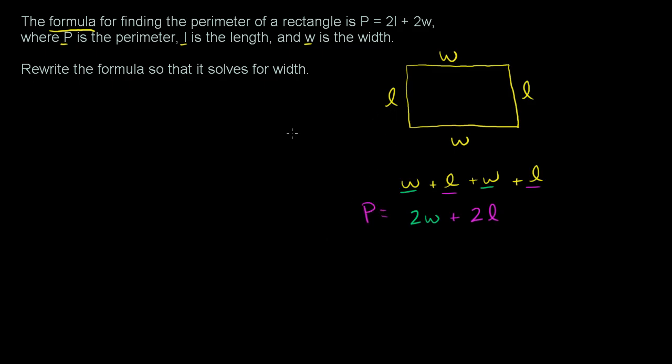So hopefully that makes sense. Now, their question is, rewrite the formula so that it solves for width. So it solves for width. The formula, the way it's written now, it says P is equal to something. They want us to write it so this w right here is w equals a bunch of stuff with l's and P's in it and maybe some numbers there.